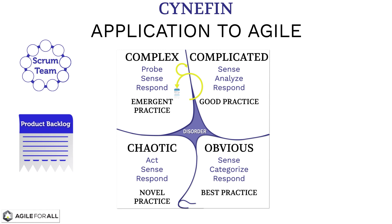The sprint review and retrospectives then allow us to sense whether we got the desired outcomes from that experiment, with amplifying or dampening steps captured as changes to the product backlog — the output of the sprint review meeting — and system improvements, the output of the sprint retrospective meeting.